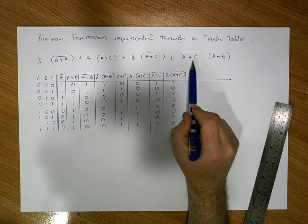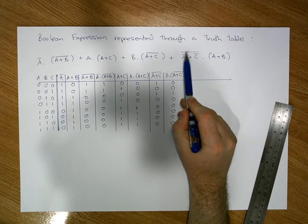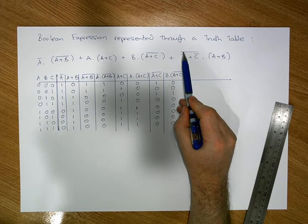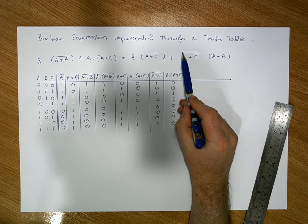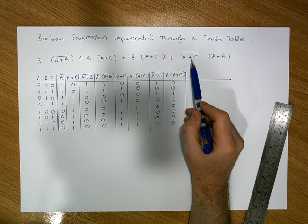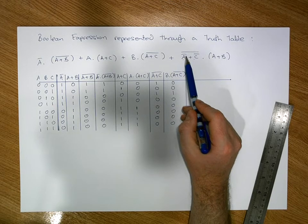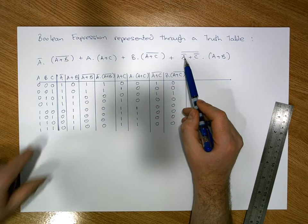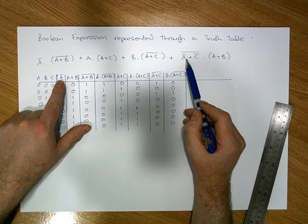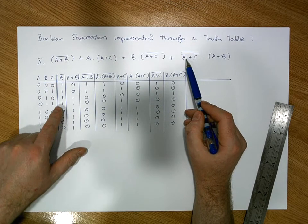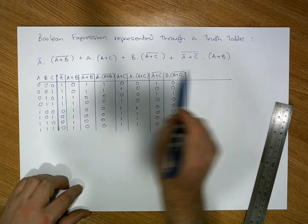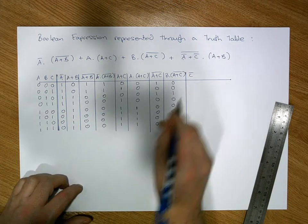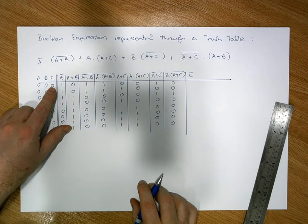The fourth term is a little more complicated. On the left-hand side of the AND we have (A-bar OR C-bar)-bar. Before the outer bar we need A-bar OR C-bar, which requires A-bar (already calculated) and C-bar. We haven't calculated C-bar yet, so we create that column by taking the C column and inverting it.